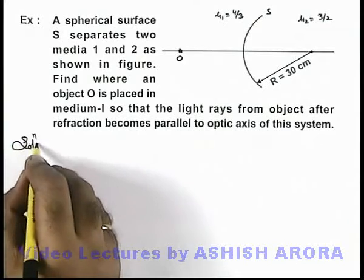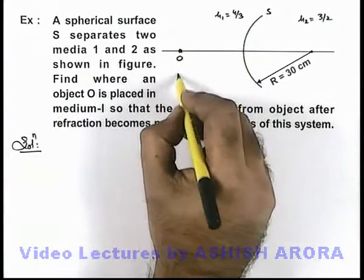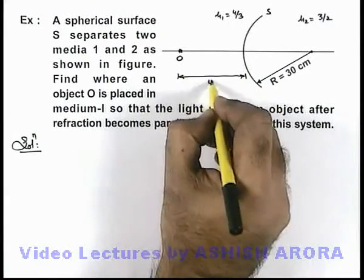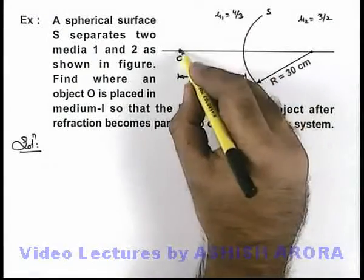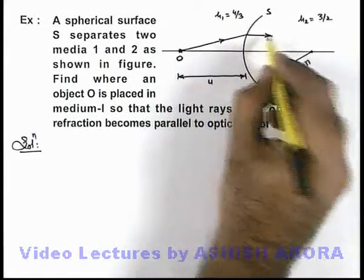Now in this situation, we are required to find the value of u, that is the distance of the object from the pole of this surface, such that the final light rays which are refracted into medium 2 will be parallel.